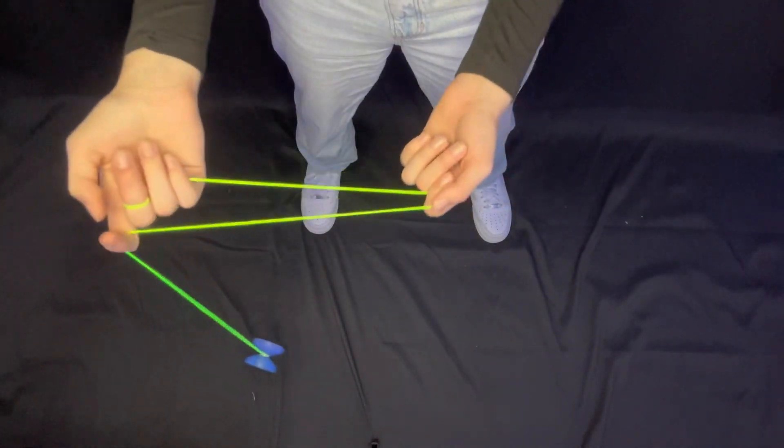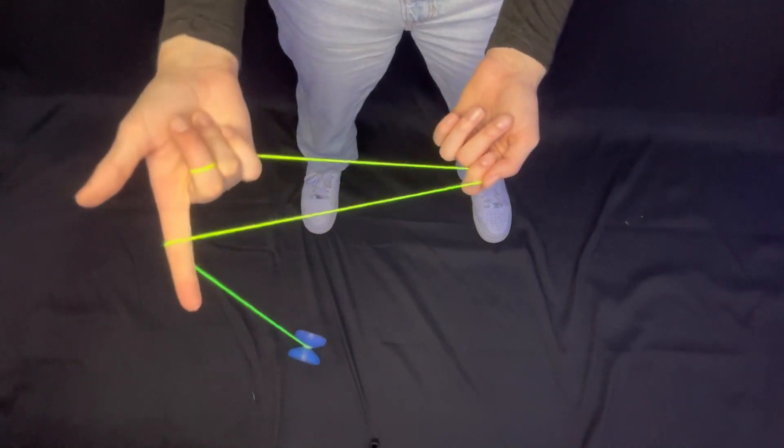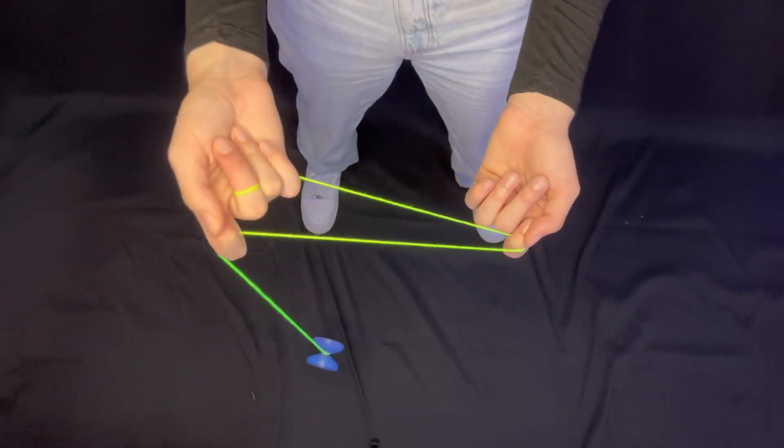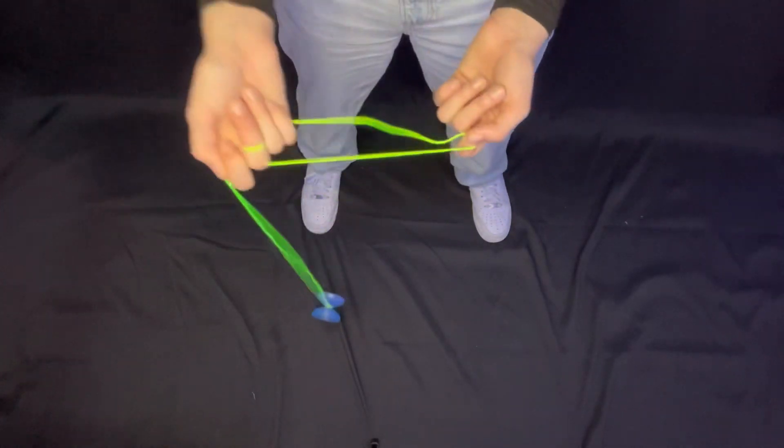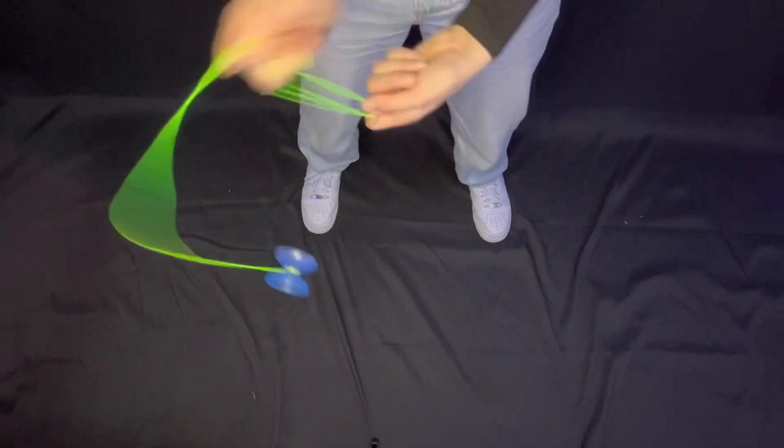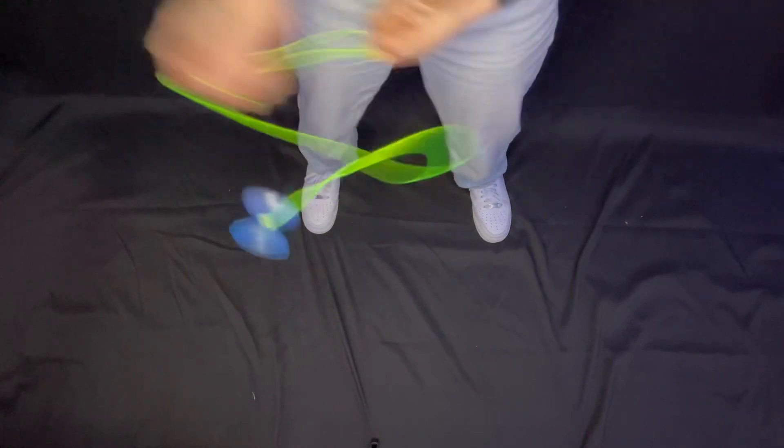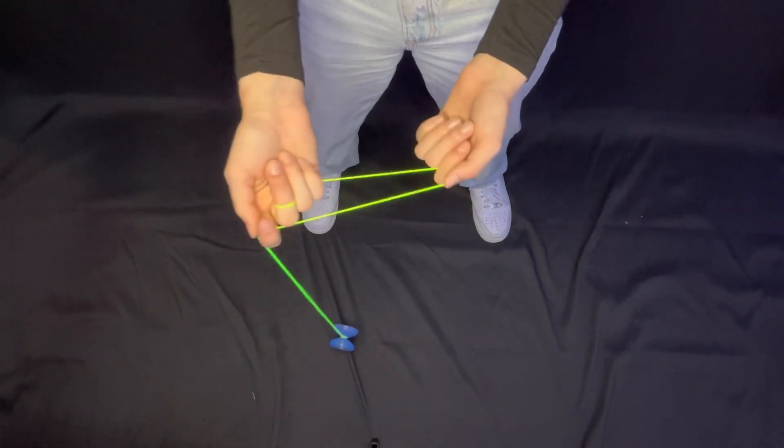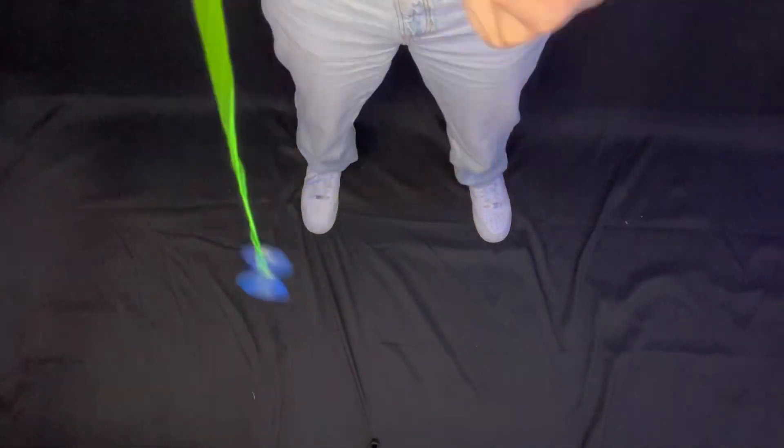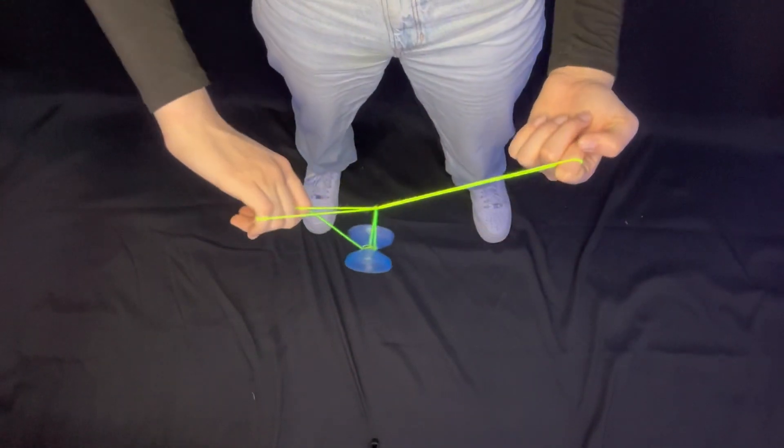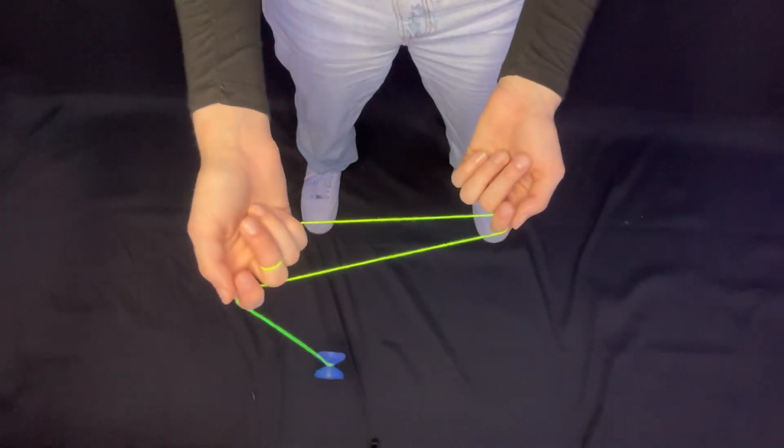And then as it goes off like this, you want to take your pointer finger, like your throw hand, and you want to whip it like this counterclockwise. And you want to whip it twice, actually. So you can even try to make it easier. You can try just doing one just to start and trying to land it like this. So I'll put it in slow motion.